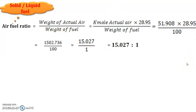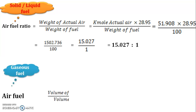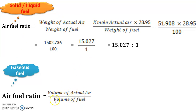The second case — for gaseous fuel air-fuel ratio — will be discussed in the next video. For a gaseous fuel, the ratio is simply the volume of actual air divided by the volume of fuel. Since kilomoles of actual air equals volume of actual air, and the volume of fuel is 100, no multiplication is required. Just take the ratio of these two values to get the air-fuel ratio for gaseous fuel.